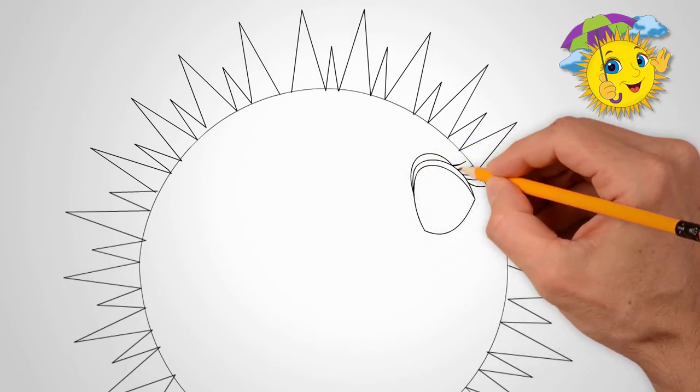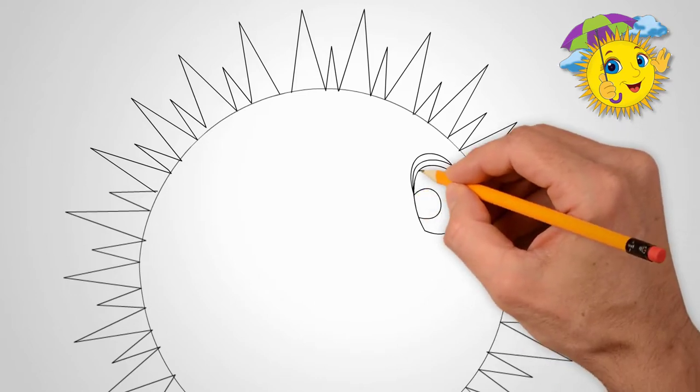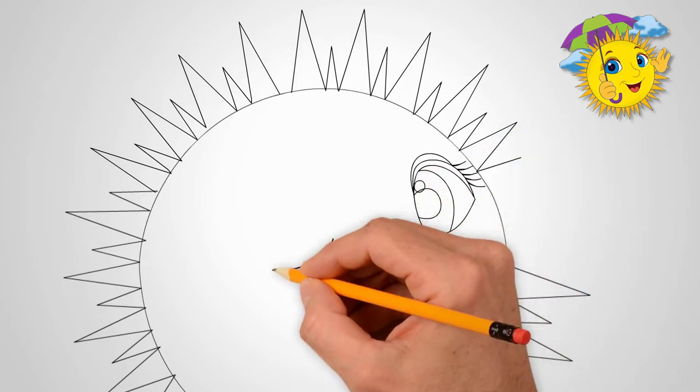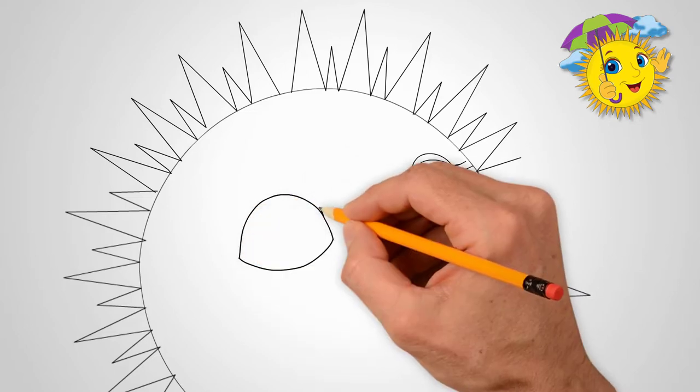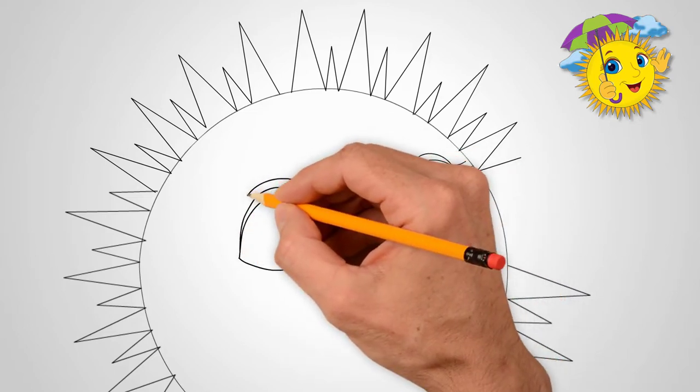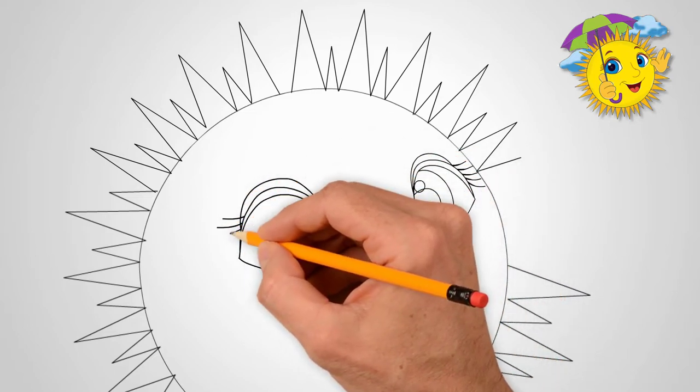Our sun has eyes. Open and happy. Let's draw eyes. First we draw one eye. Draw the contour of the eye. In the middle we draw the pupil of the eye. Draw eyelashes.